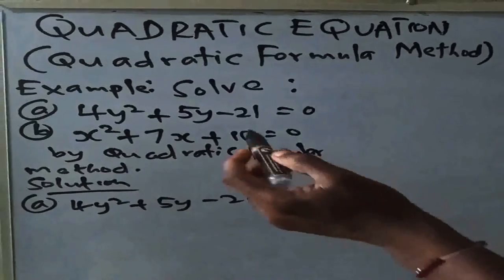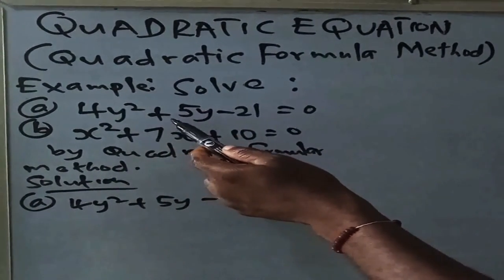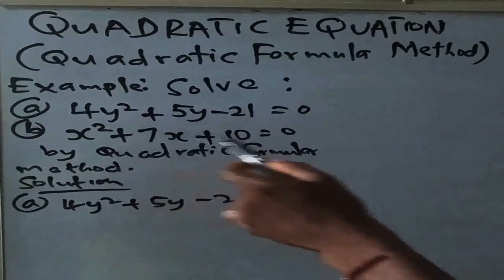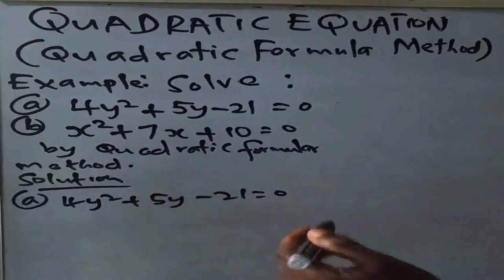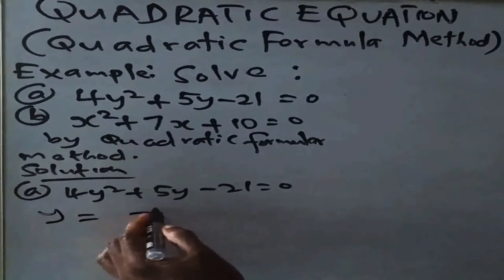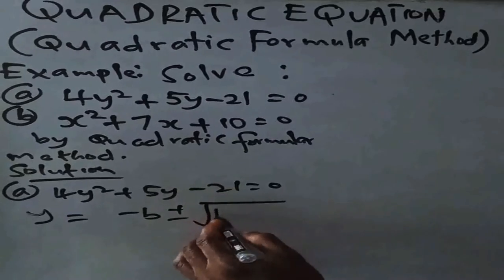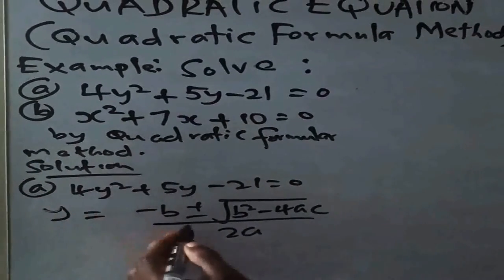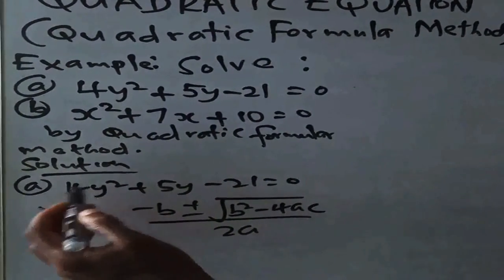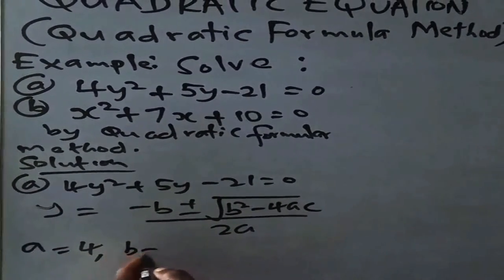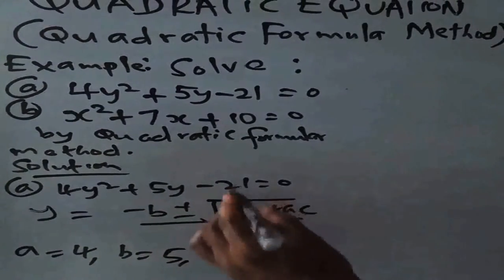This formula was derived from the completing the square method. From the previous video we have the first example under the completing the square method, so you can confirm that. We are now solving by the quadratic formula method. The unknown here is y. So y equals minus b plus or minus the square root of b squared minus 4ac over 2a. Here a is the coefficient of y squared, so a is 4. b is the coefficient of y, which is 5, and c is the constant, which is minus 21.